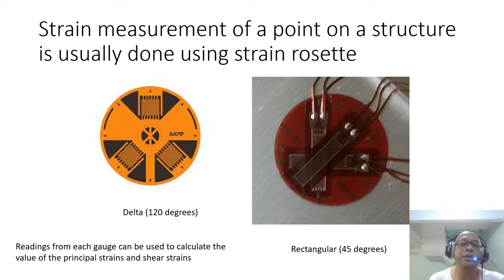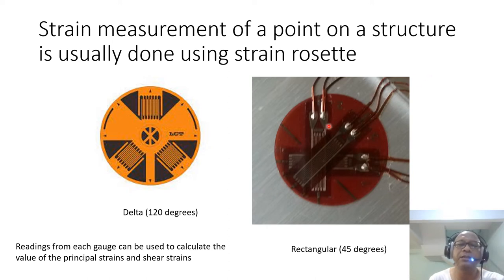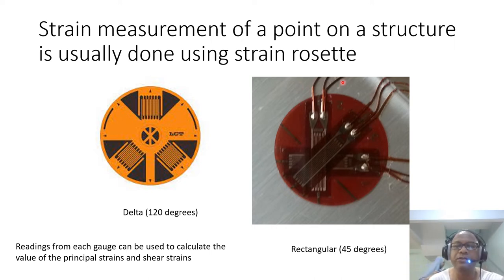Strain measurement of a point on a structure is usually done using a strain rosette — this is the cheapest or perhaps the most widely available technique. You put this small device on a structure, connecting the strain gauges via wires to a Wheatstone bridge or data acquisition system. From the readings of each gauge, using mathematical equations, you can relate the readings to the normal strain in the x direction, the normal strain in the y direction, and also the shear strain.